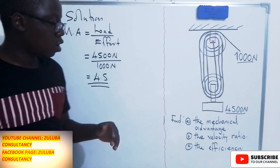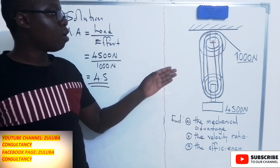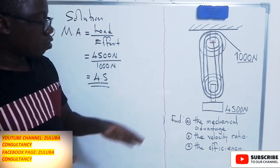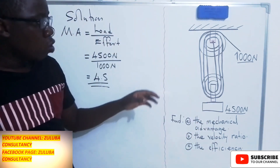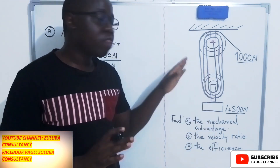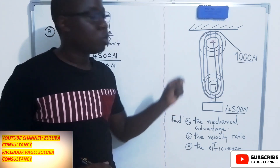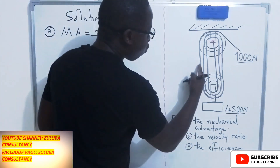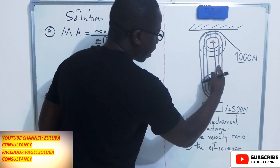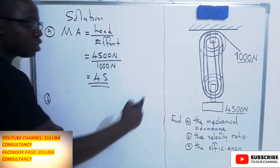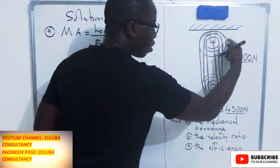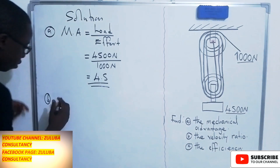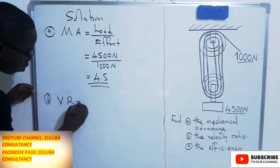The second question is asking us to find the velocity ratio. Remember, this is a pulley system, so when asked to find the velocity ratio, you simply count the lines connected to the moving pulleys. In this case, we have 1, 2, 3, 4, 5, 6 lines connected to the moving pulley. We are not going to count the last line because it is not connected to the moving pulley. So the velocity ratio is 6.